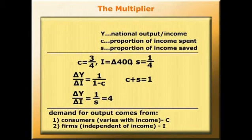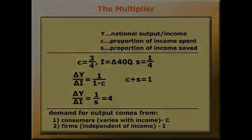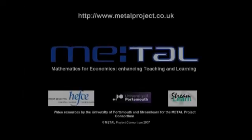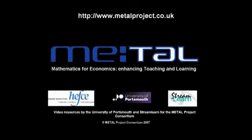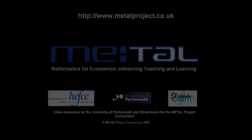It tells us when there is an increase in autonomous demand, output will rise by some multiple of that. And we can see that if we understand basic algebra. That's the logic of the multiplier. Thank you.